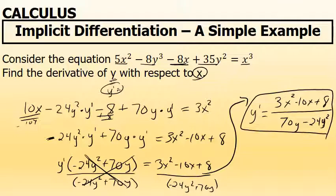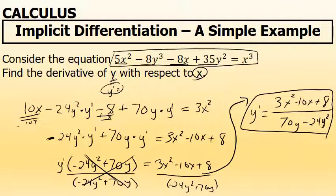So the derivative of 5x squared minus 8y to the third minus 8x plus 35y squared equals x to the third, found by implicit differentiation, is y prime equals 3x squared minus 10x plus 8, all over 70y minus 24y squared.